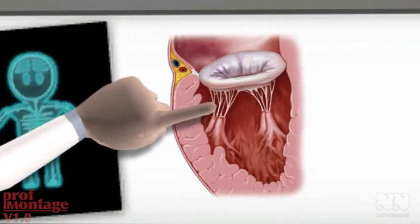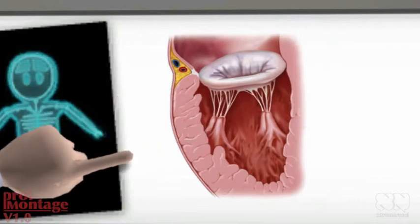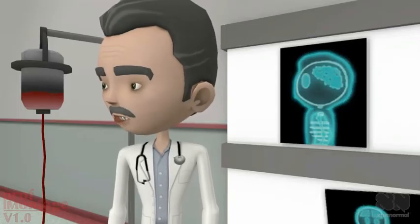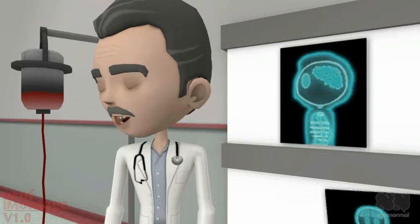The cords attach to the leaflets and the papillary muscles attach to the cords. The whole apparatus acts as a fixed structure against which the myocardium shortens.